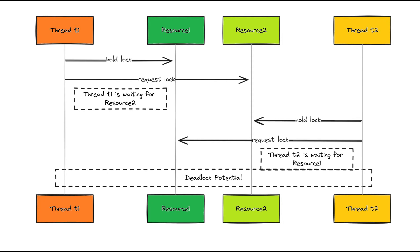Now we have seen the code thoroughly and we know it is a deadlock, but identifying deadlocks through code analysis in a large application is not a viable solution. Most of the time it is not possible at all, because a large application has a large code base and you cannot thoroughly examine each and everything. Also in multi-threading, you never know when the control will shift to which particular block.